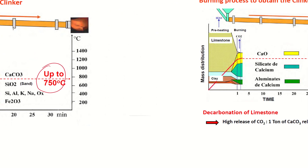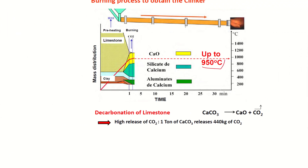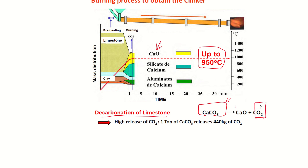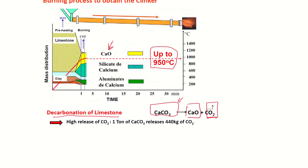Moving on to 950 degrees Celsius, we have the formation of calcium oxide. This calcium oxide is a result of the decarbonation process of limestone. Decarbonation refers to the production of carbon dioxide due to the breaking down of calcium carbonate. The result is, apart from the carbon dioxide, we also produce calcium oxide. That's the first step in the burning process.